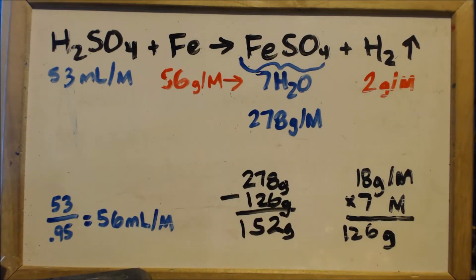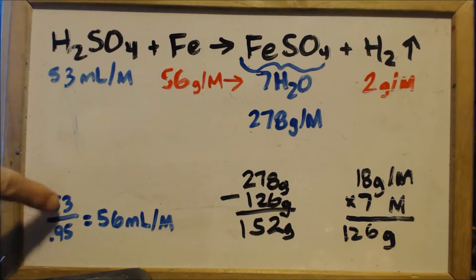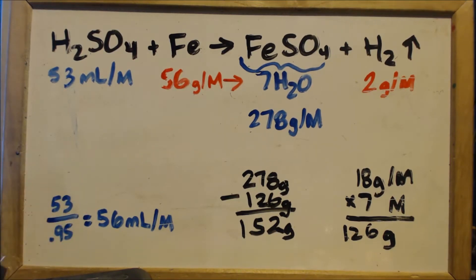And I'm just going to basically do molar amounts. I'm not going to, usually I cut it down, but this isn't that much. 53 milliliters of sulfuric acid, 56 grams of iron. And since it's 95%, which I'm guessing, I'm going to put in 56 milliliters.